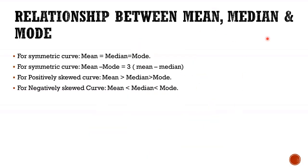Now what is the relationship between the mean, median and mode? For symmetric curve, mean equals median equals mode. For symmetric curve again, mean minus mode equals 3 times mean minus median. For positive skewed curve, mean is greater than median, greater than mode. And for negatively skewed curve, mode is greater than median, greater than mean. We will understand in the next videos what is the skewness of the curve, what is the normal distribution, etc.